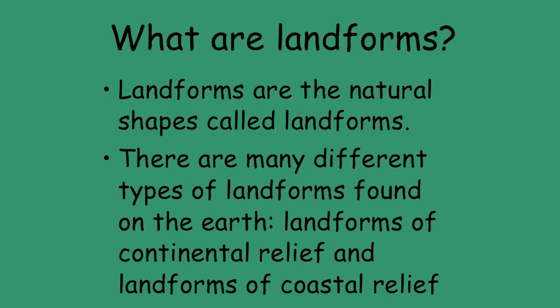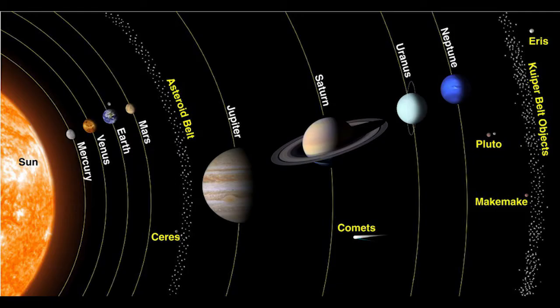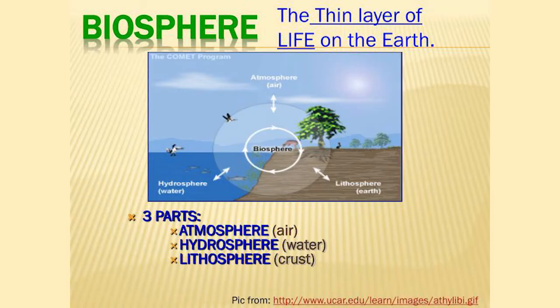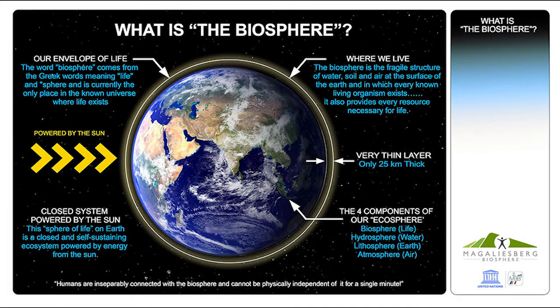Landforms are the natural features of the surface on the earth. As you already know, earth is the third planet in the solar system. It is the only living planet in our solar system, so it is called biosphere. Bio means life, and sphere is the shape of the earth. So we can call earth as biosphere or life sphere.